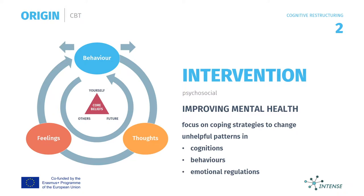The diagram depicts how emotions, thoughts and behaviors all influence each other. The triangle in the middle represents Cognitive Behavioral Therapy's tenet that all humans' core beliefs can be summed up in three categories: self, others and future.